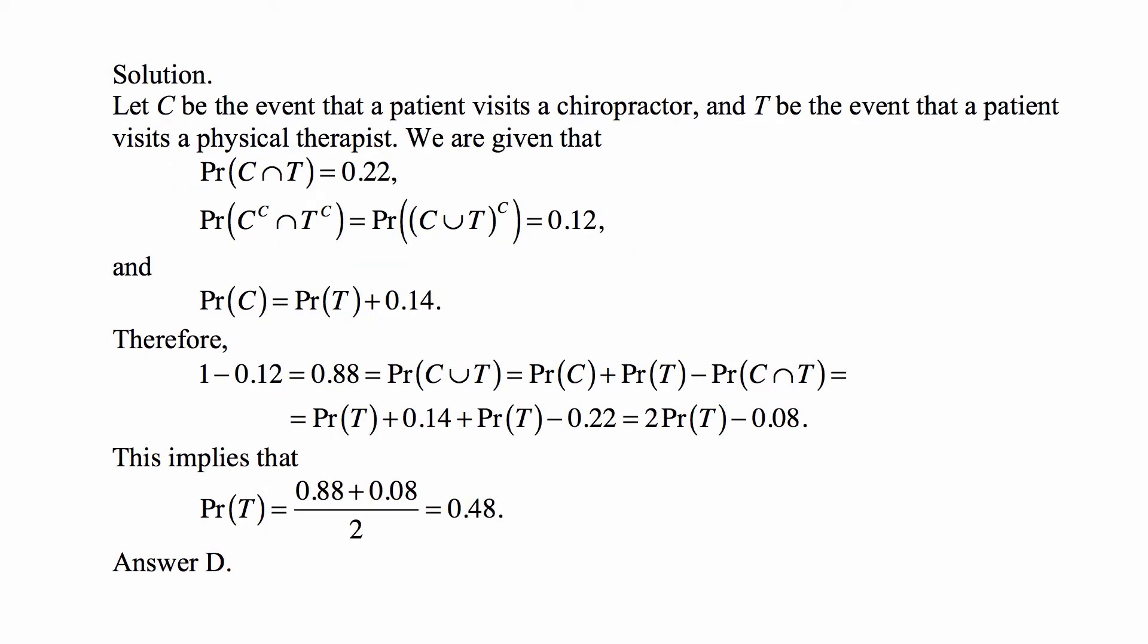Remember, when you're dealing with these kinds of basic probability problems, a very important first step is to label the events, then write down what information you have, and then ask yourself what you're looking for.